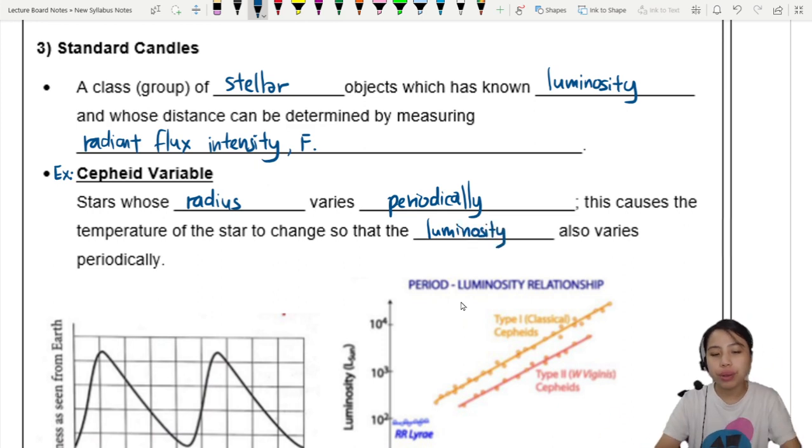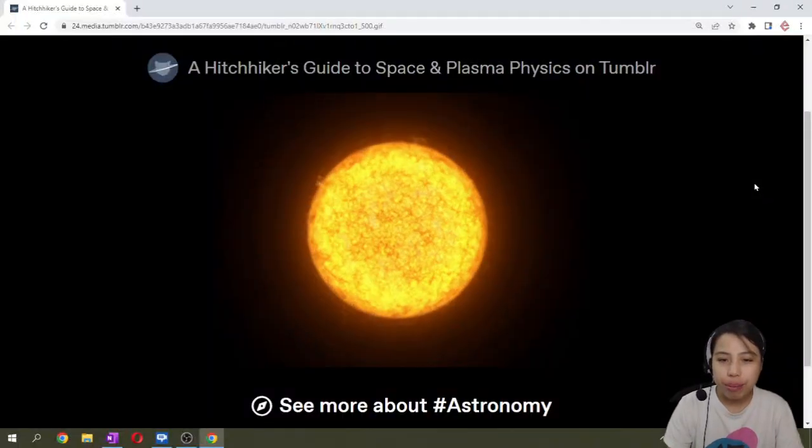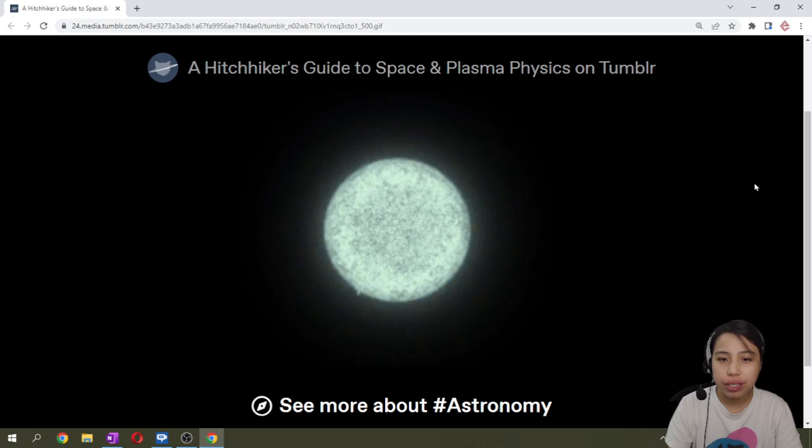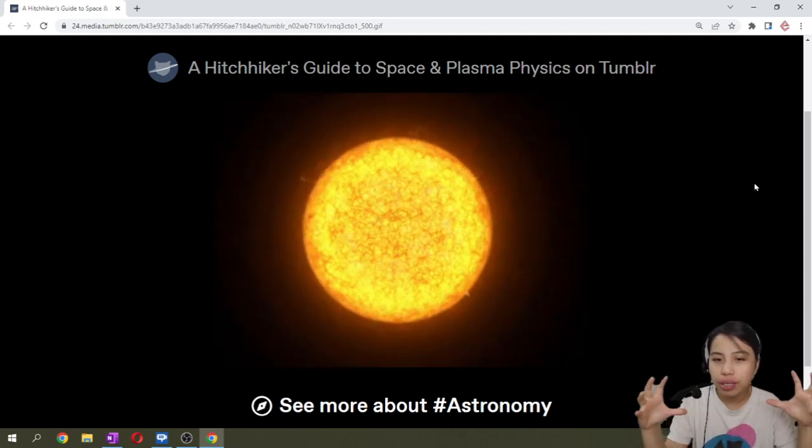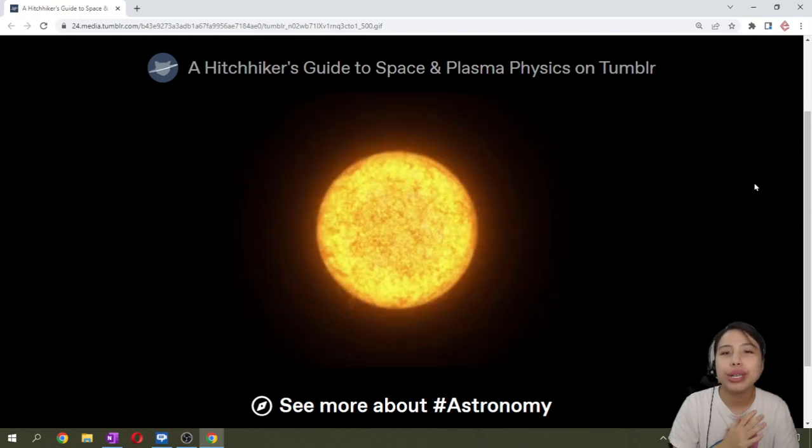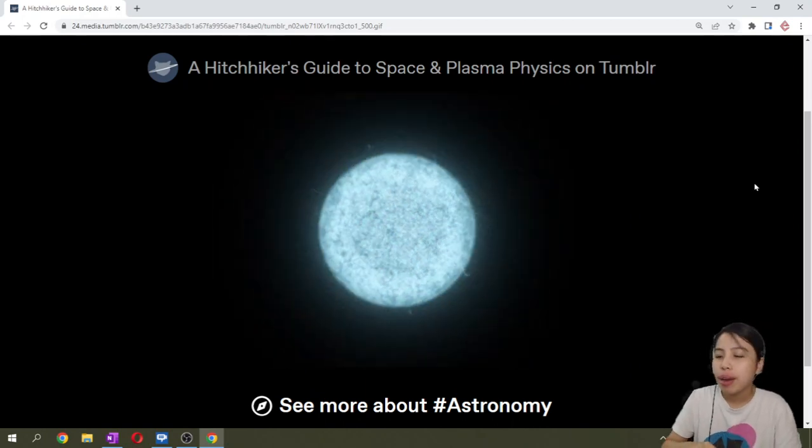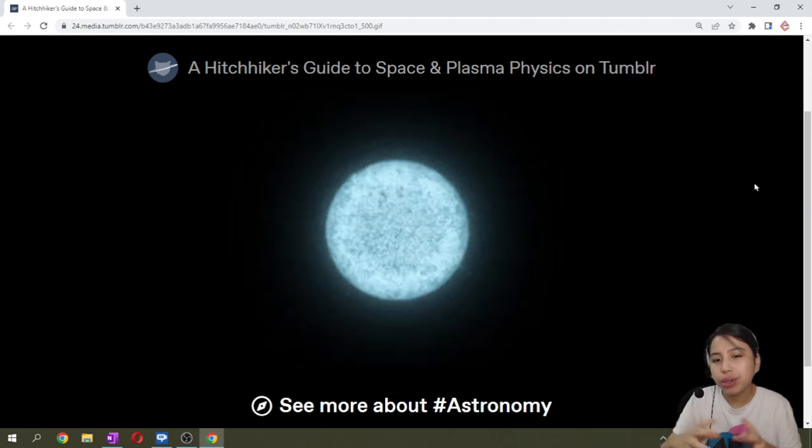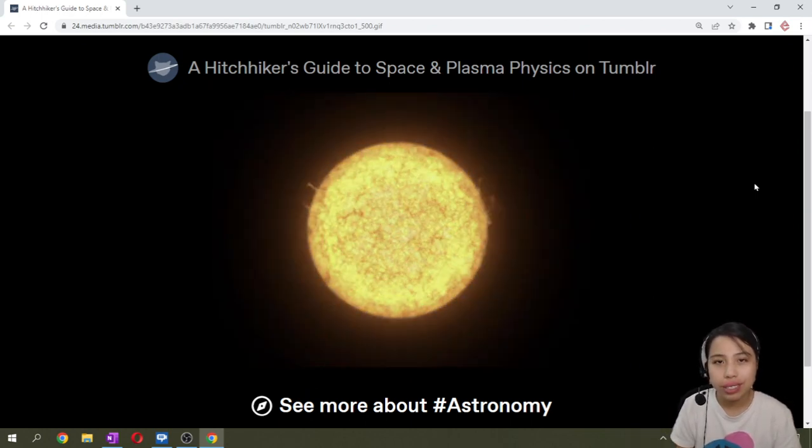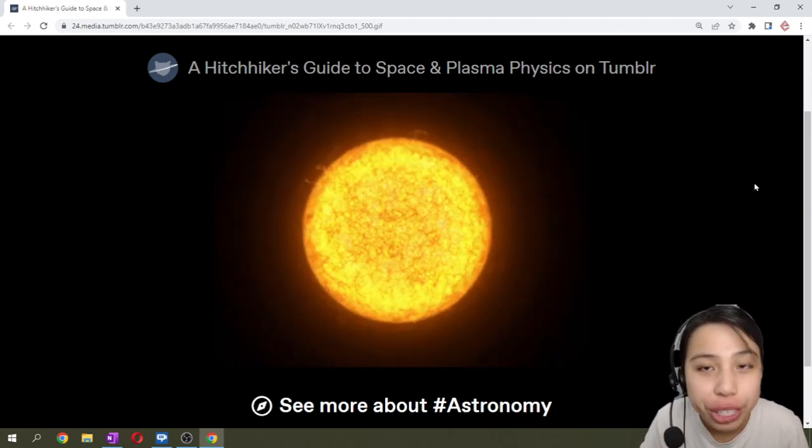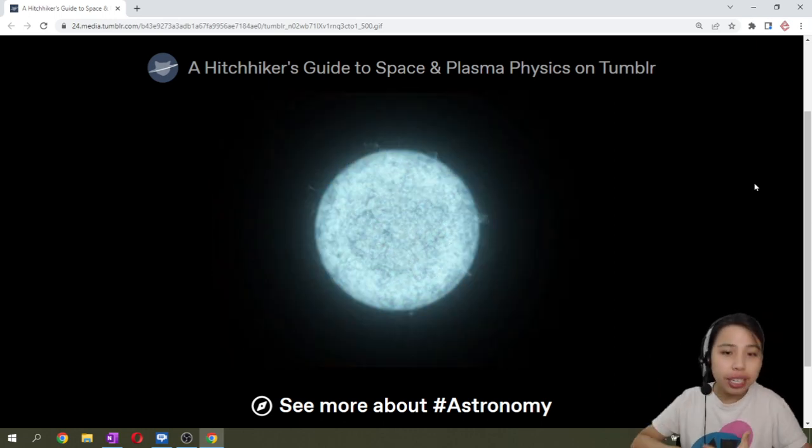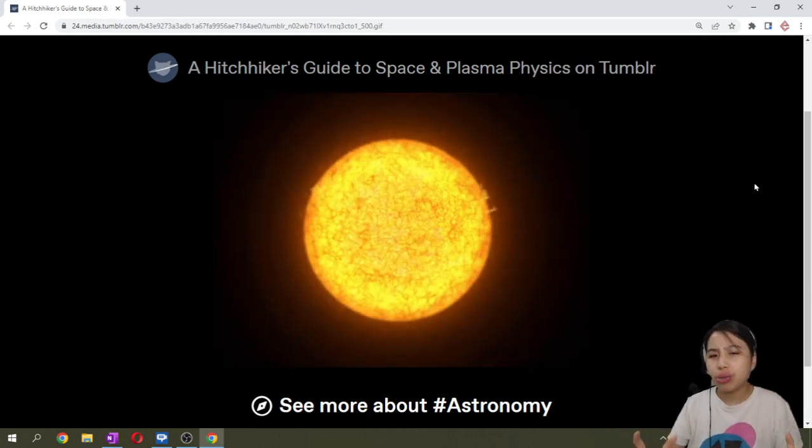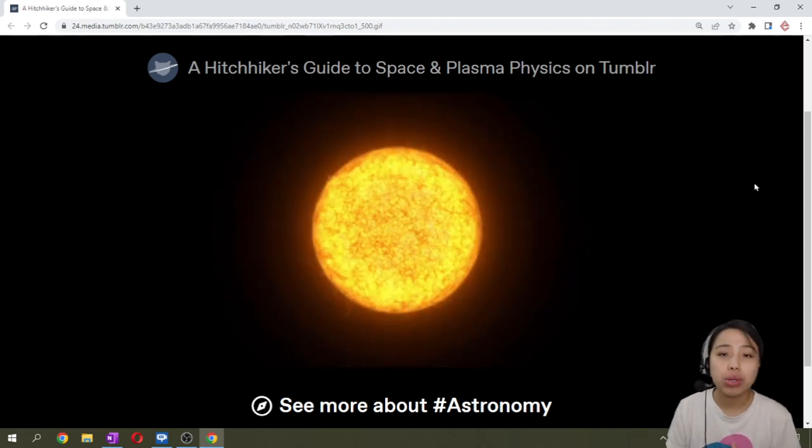The temperature of the star changes so that its luminosity also varies periodically. The radius varies - big, small, big, small. As the radius changes very big versus very small, you notice the color changes. That's related to the temperature. Not only is the temperature changing, the luminosity or true brightness or power radiated is also changing.